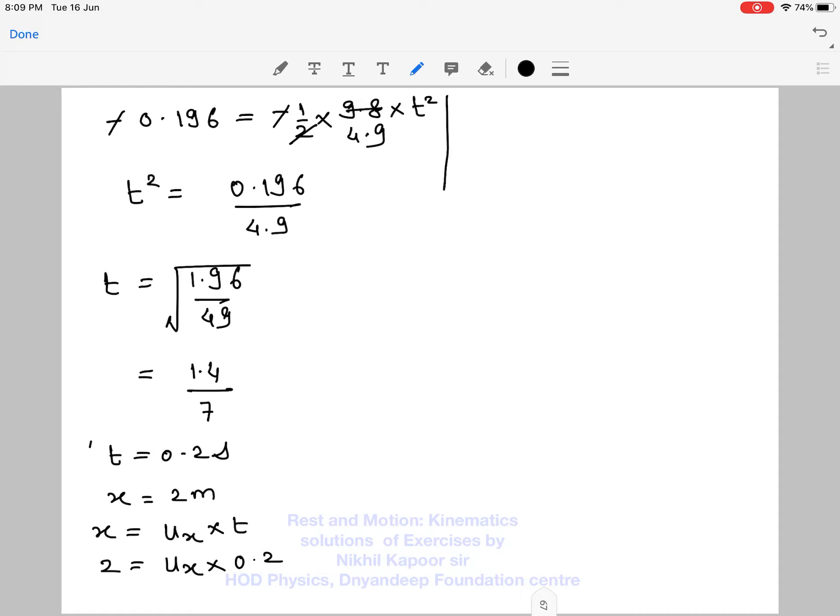This is 2 meter, we need to find the speed so that in 0.2 second it falls 2 meter. You will see that ux comes out to be 2 upon 0.2 and the answer comes out to be 10 meter per second. So it should be thrown with 10 meter per second. Thank you.